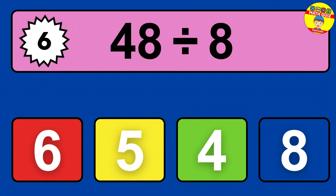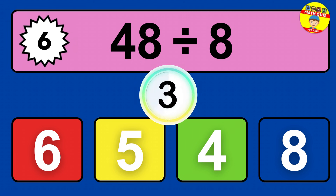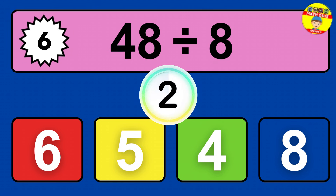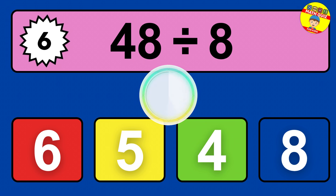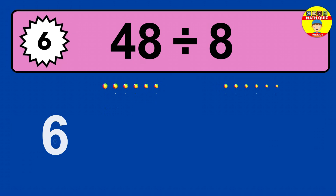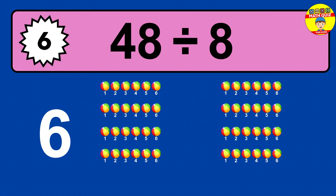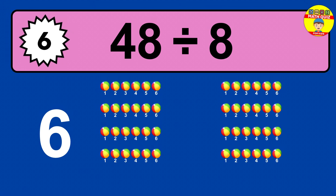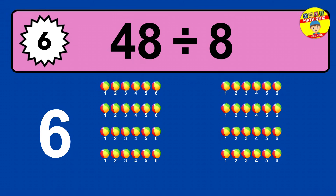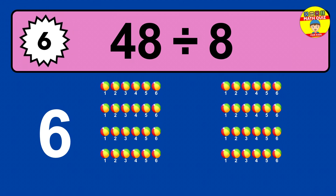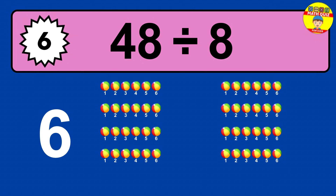48 divided by 8 — time to think. Let's go to the solution. Divide the number 48 by 8. Each group contains 8 units, so dividing 48 by 8 results in 6 equal groups. Thus, the result is 48 divided by 8 equals 6.